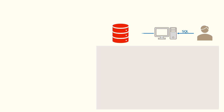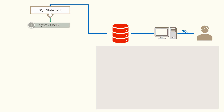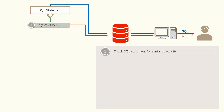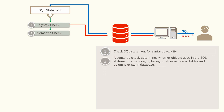Suppose a user enters an SQL statement. The moment it reaches the Oracle database, the first step Oracle performs is a syntax check — it verifies whether the statement follows the expected syntax. If there is a syntax error, Oracle throws an error back to the user. Once the statement passes the syntax check, it goes through the next step called a semantic check, where Oracle verifies that the database objects referred to in the query are correct — the table name, the column names, and whether the user has the right privilege to execute the statement.